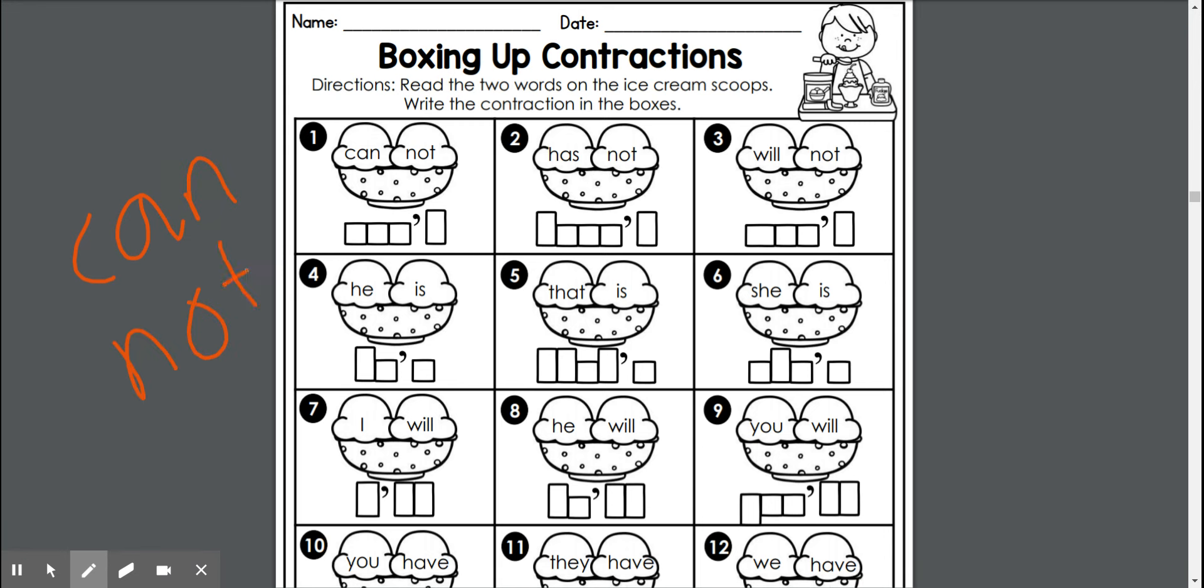Okay, so one of the important things that we have to know about contractions is it's a shortening of words. We kind of use it in our everyday speech and writing. If you often look at it, it contains an apostrophe. So if we shorten these two words, we get into the word can, not. It becomes can't.